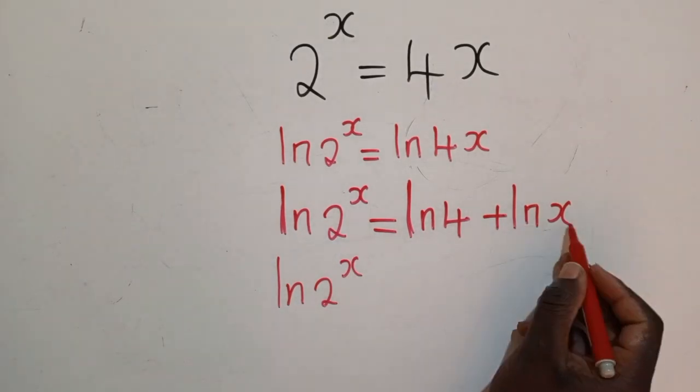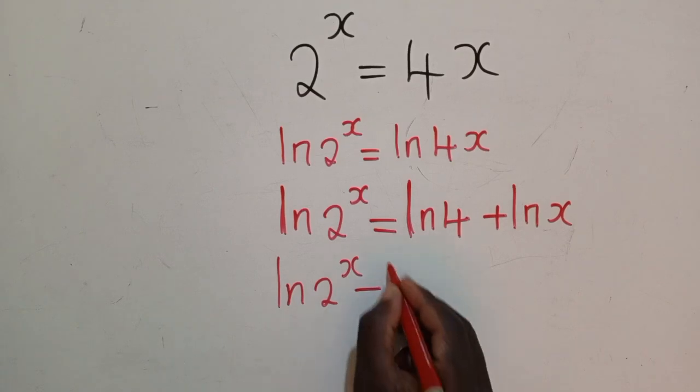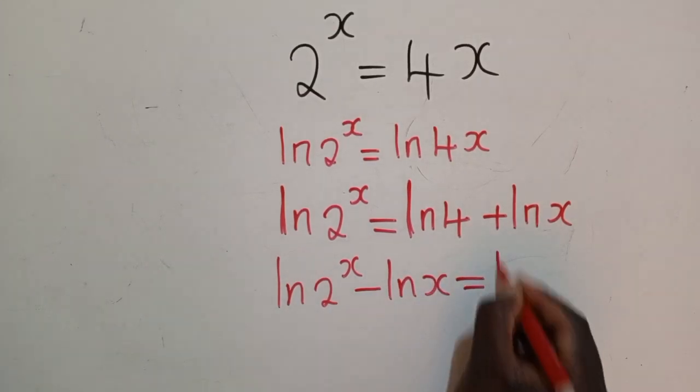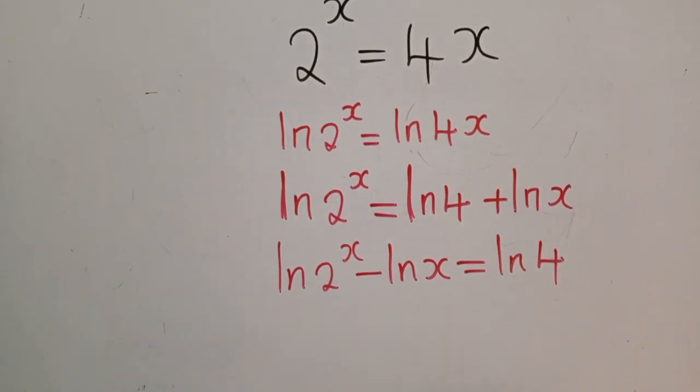So this side, it will look like this. And the other side, we shall have ln of 4, like that.